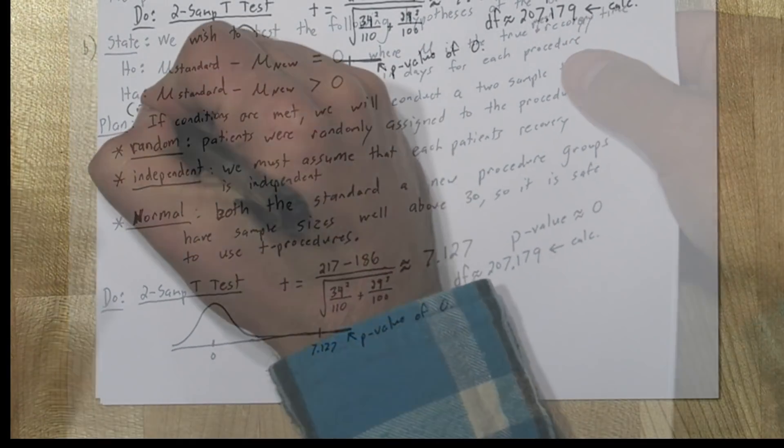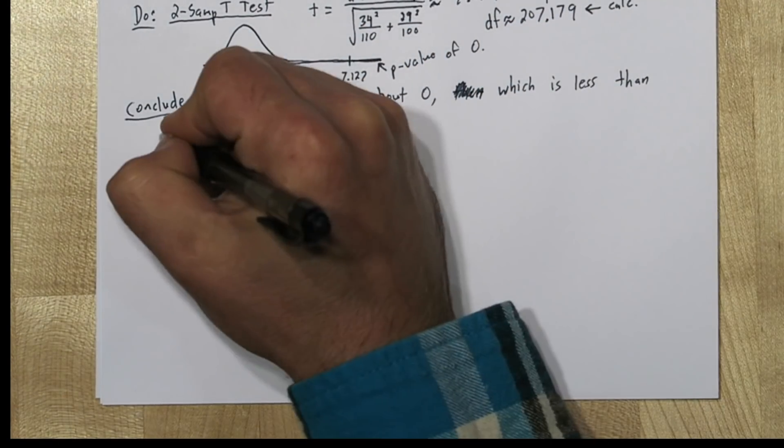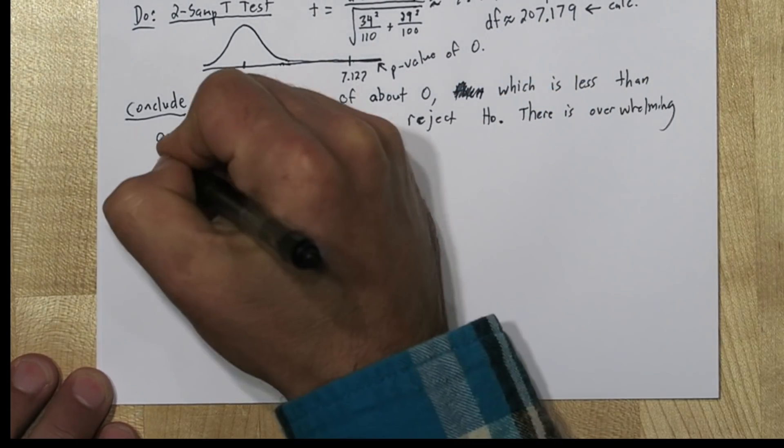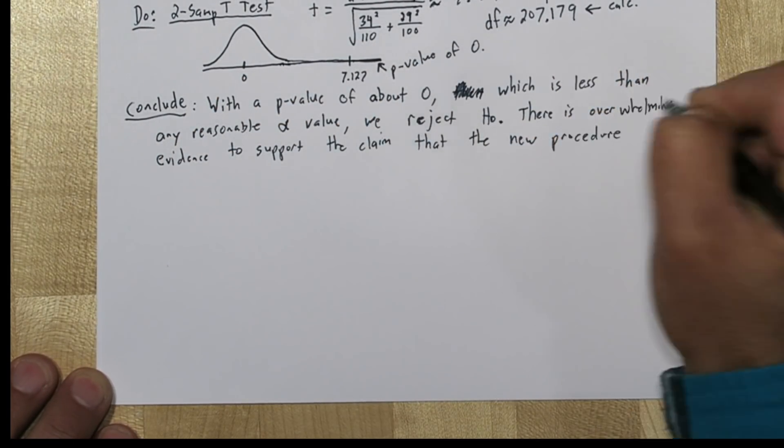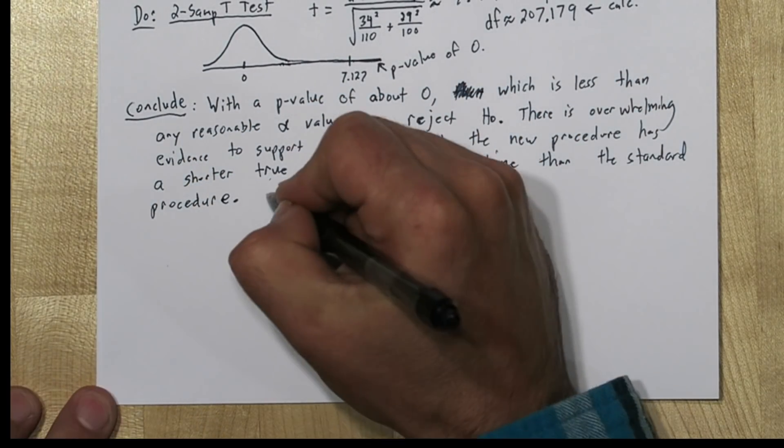So for our conclusion we'll say with the p-value of about 0, which is less than any reasonable alpha value, we reject the null hypothesis. There is overwhelming evidence to support the claim that the new procedure has a shorter true mean recovery time than the standard procedure.